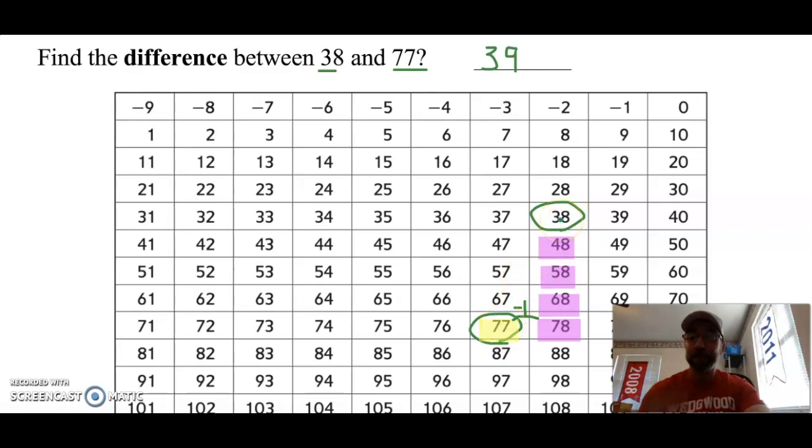I counted by 10s first by going down: 10, 20, 30, 40. Now I have to go backwards to get to my number 77. So that means I have to subtract 1. 10, 20, 30, 40, minus 1 gives me 39. So my answer is 39. Awesome job.